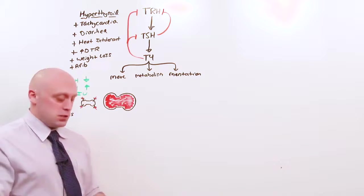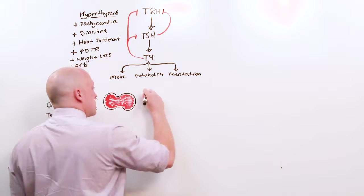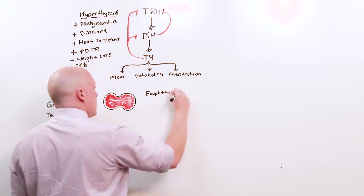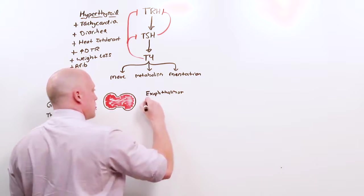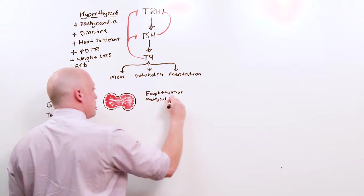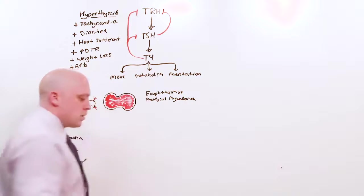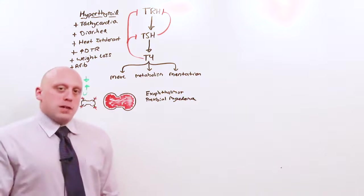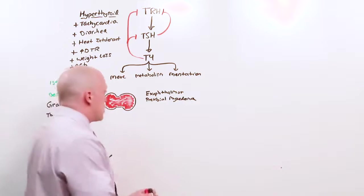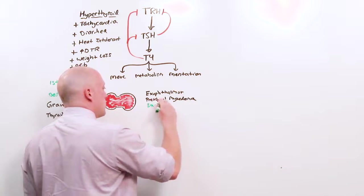There are some nuances to Graves' disease you need to know. There might be specific findings of Graves' disease, which is exophthalmos, buggy eyes, and the muddy shins, pre-tibial myxedema. Along with Graves' disease are those thyroid stimulating antibodies. So if you have an option to check, you could check for thyroid stimulating antibodies.